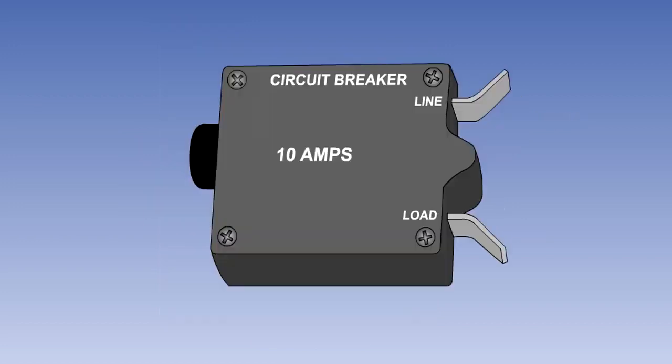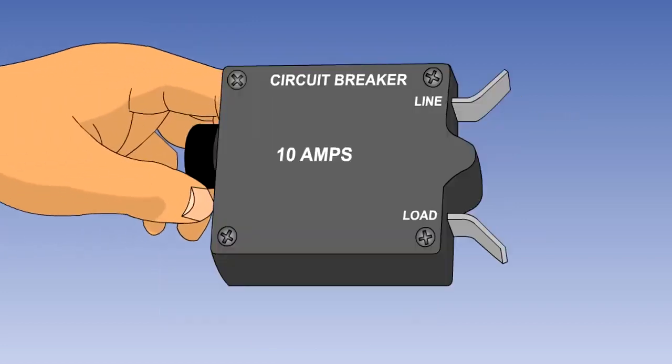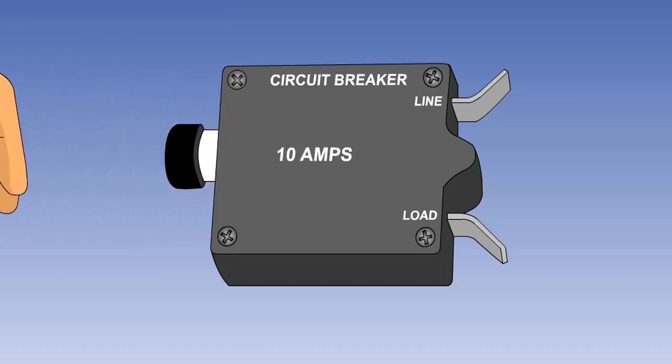If a circuit breaker has been pulled for maintenance purposes, then a clip with a red flag attached is affixed to the shank, to warn personnel not to reset it.